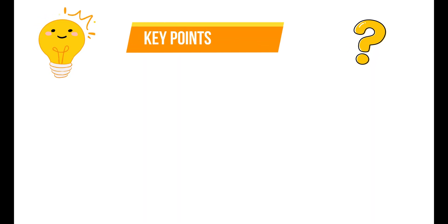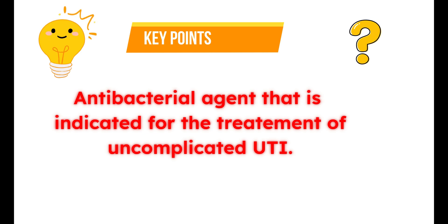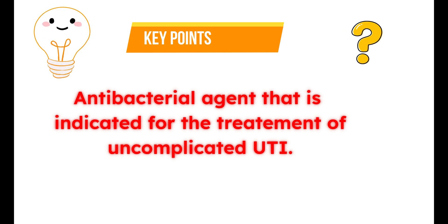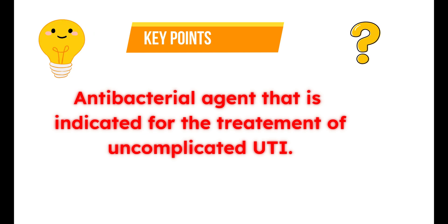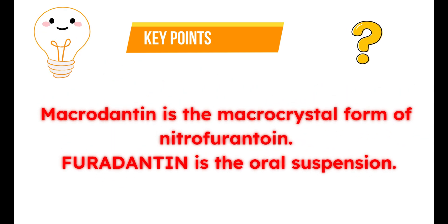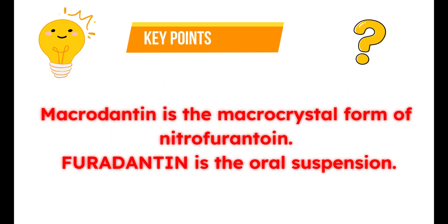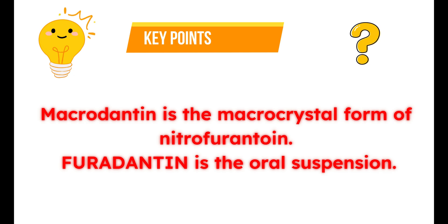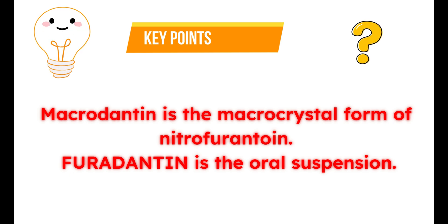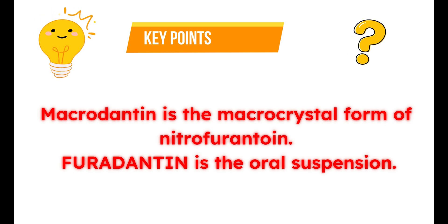What is Nitrofurantoin? Nitrofurantoin is an antibacterial agent indicated for the treatment of uncomplicated urinary tract infections. What is Macrodantin and Furadantin? Macrodantin is the macrocrystal form of Nitrofurantoin which has a slow rate of dissolution, minimizing gastrointestinal side effects. Furadantin is the oral suspension form of Nitrofurantoin.